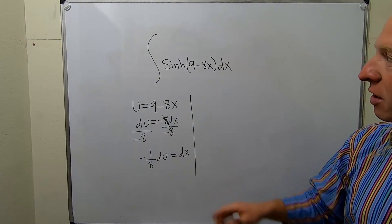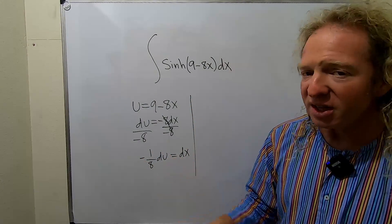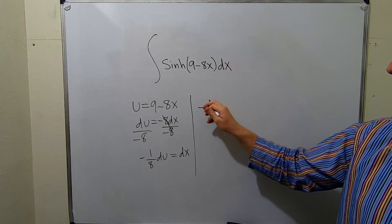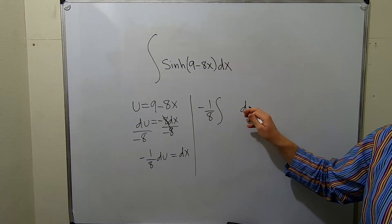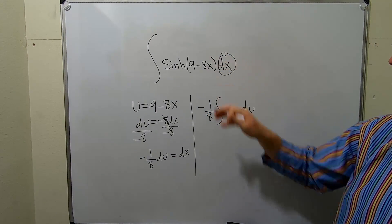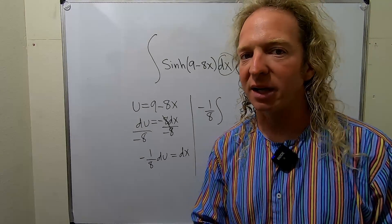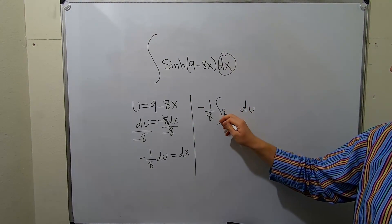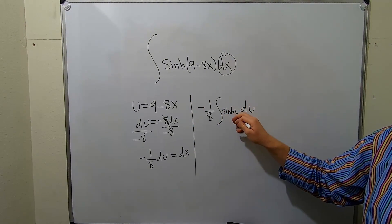So dx is negative 1/8 du. You can pull out that negative 1/8, then here you have your du. All we've replaced at this point is merely the dx. Then we're left with sinh of u. Beautiful stuff.